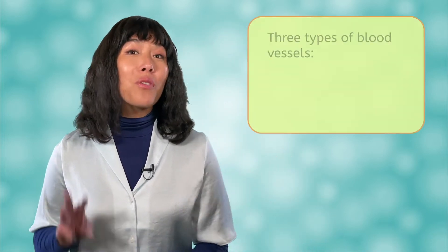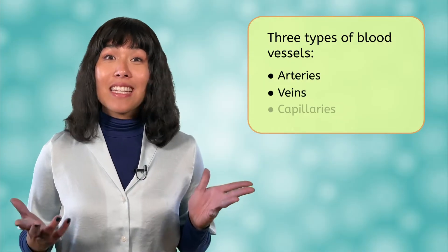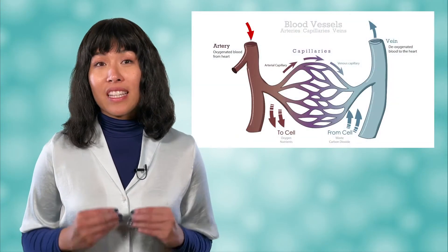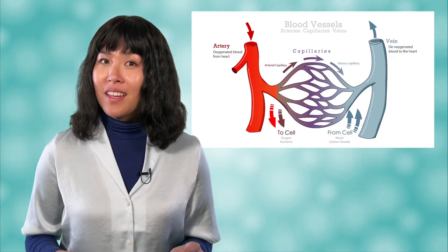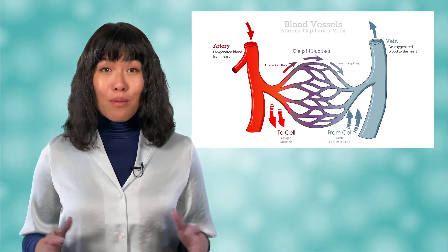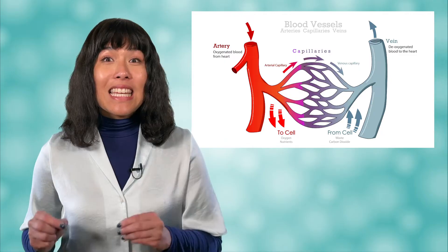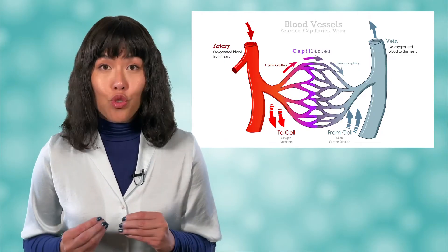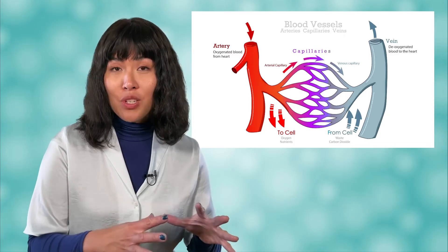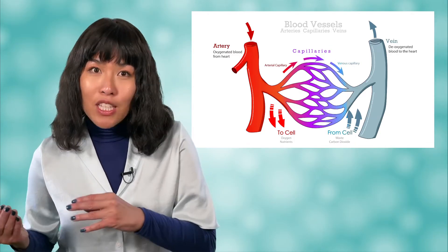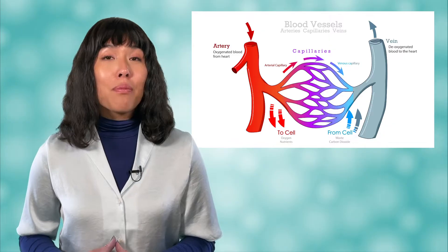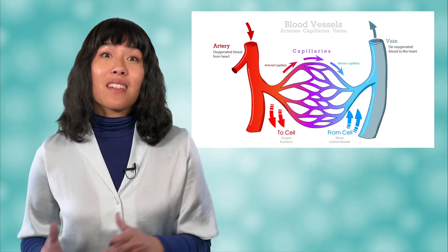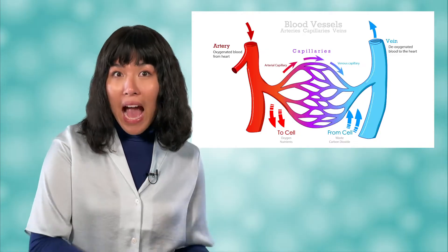Blood vessels are like highways and roads throughout the body. There are three main types of blood vessels: arteries, veins, and capillaries. When oxygenated blood leaves the heart, it flows through arteries. Eventually, the blood reaches the capillaries, which are smaller blood vessels located between the arteries and veins. It's in these capillaries that the oxygen and nutrients leave the blood to nourish the tissues, and waste is transferred to the blood. After stopping at the capillaries, the blood moves into the veins to head back to the heart, so that the waste can make its way out of the body.